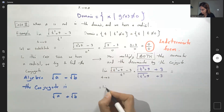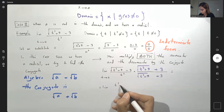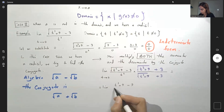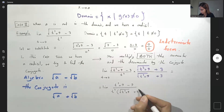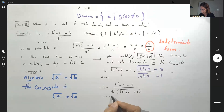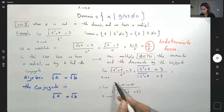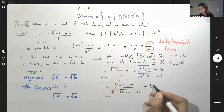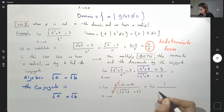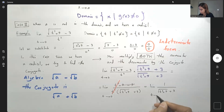It's going to be the limit of t squared plus 9 minus 3 squared, which is 9, divided by t squared times the expression square root of t squared plus 9 plus 3, as t goes to 0. The 9 and negative 9 cancel out each other, so you end up with t squared divided by t squared, which is a common factor and cancels out. We're left with the limit of 1 divided by square root of t squared plus 9 plus 3 as t goes to 0.